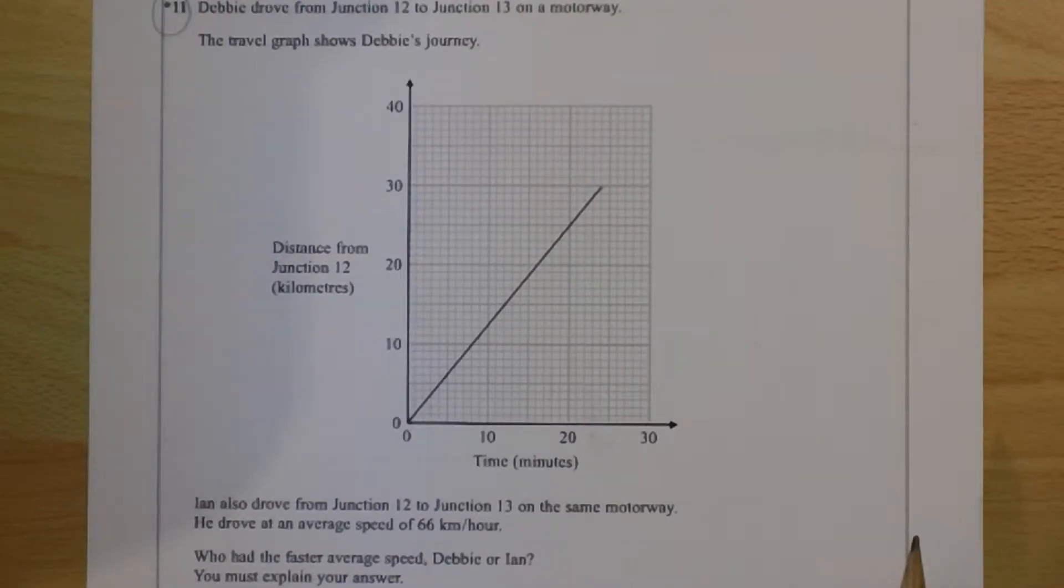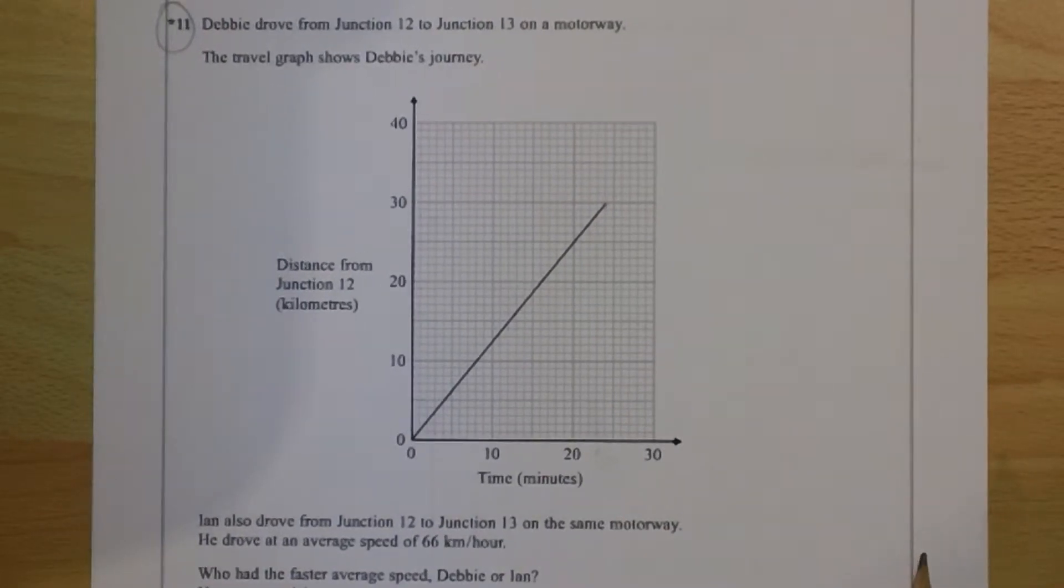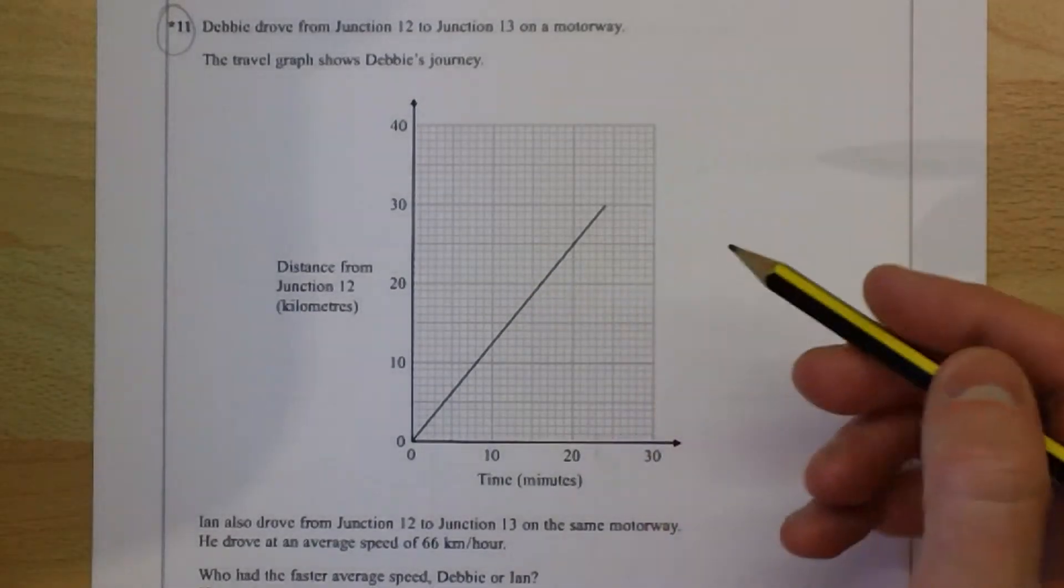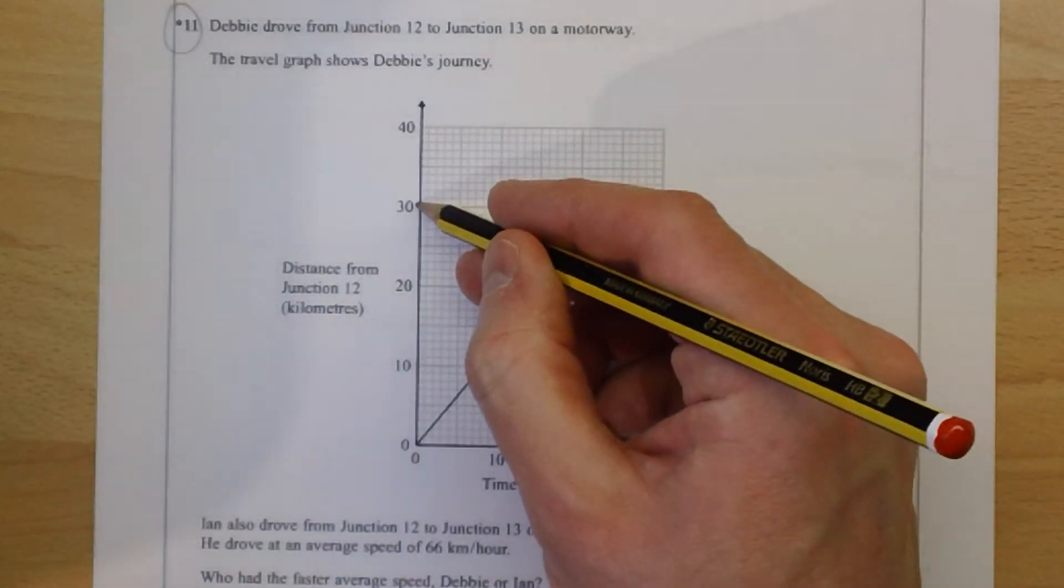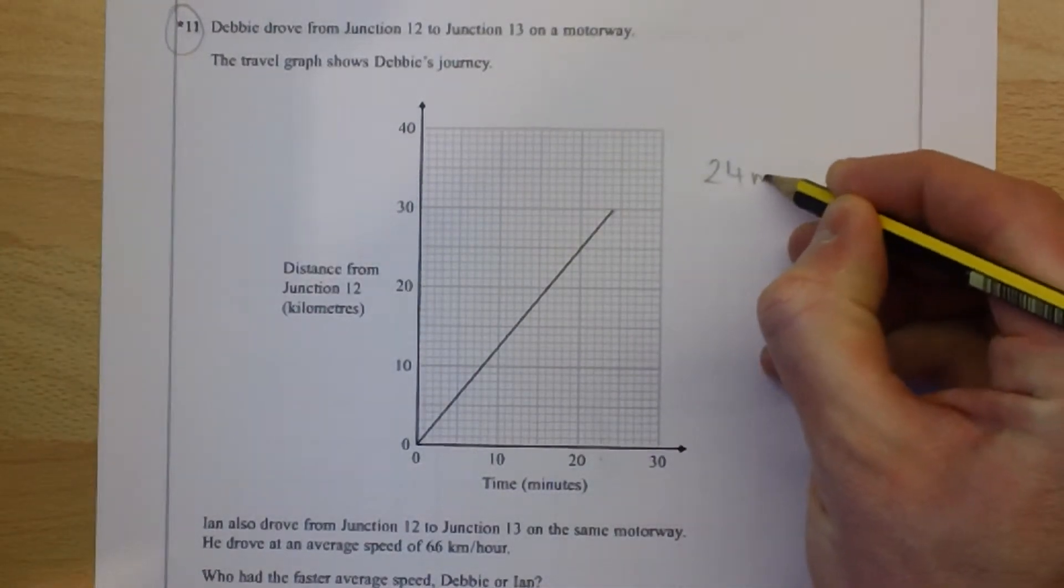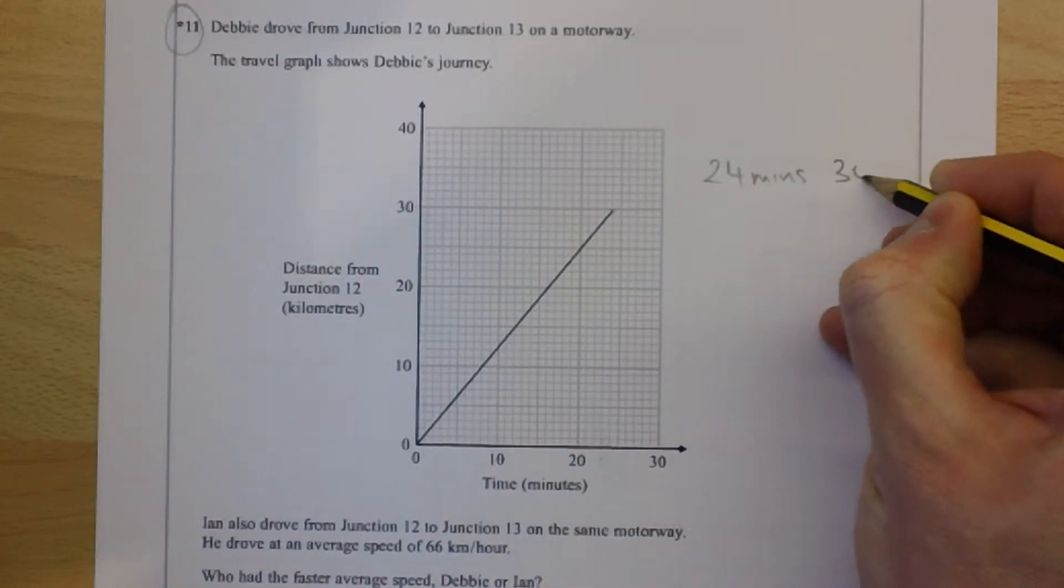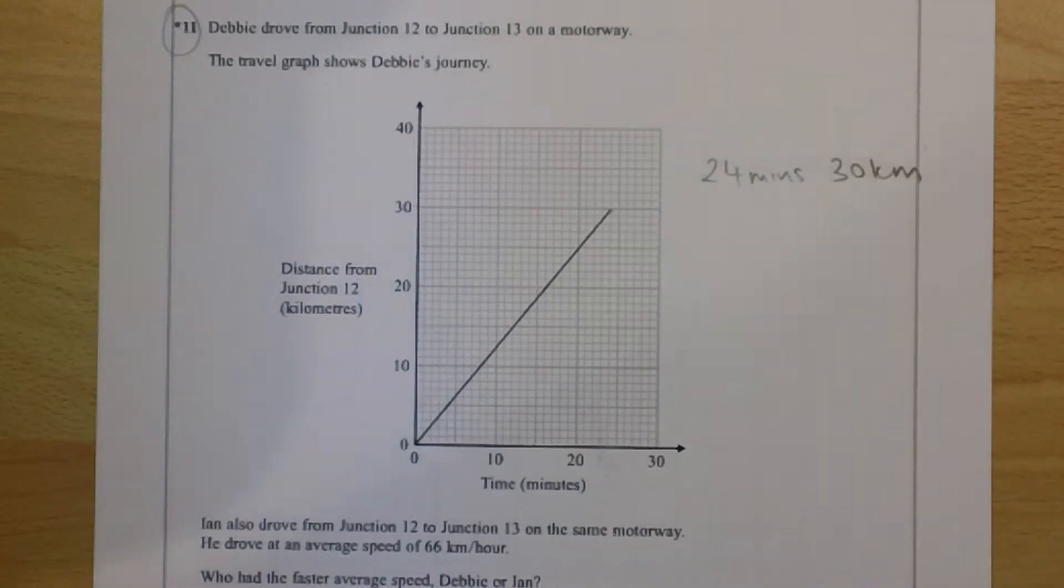Debbie's average speed first of all. You can tell from the graph that it took her 24 minutes to travel the 30 kilometres. If we want to work out our average speed, we need to know how far she's going in one hour.